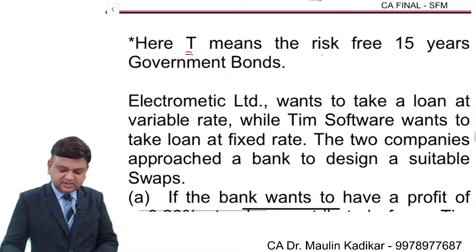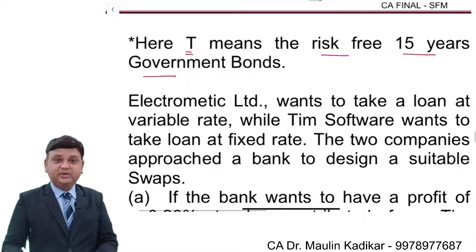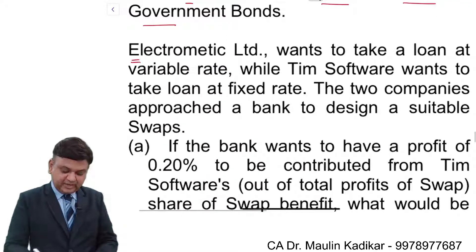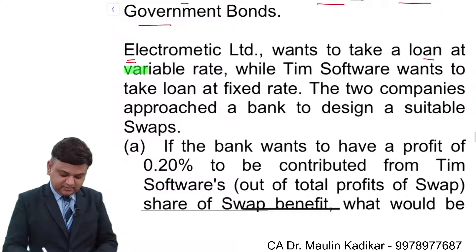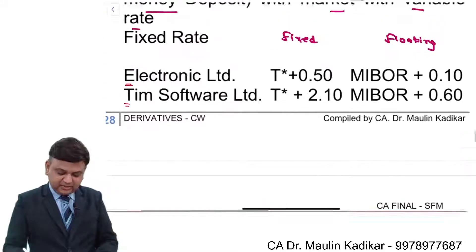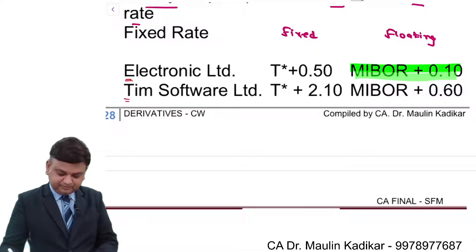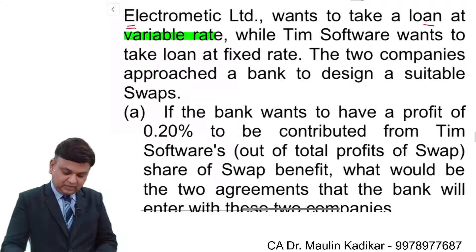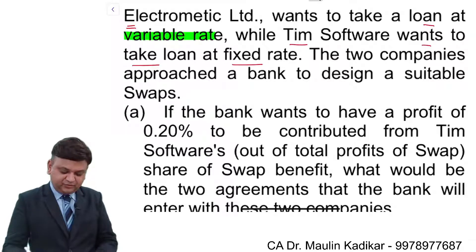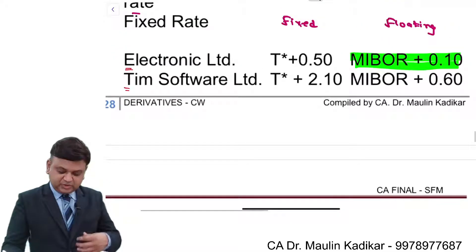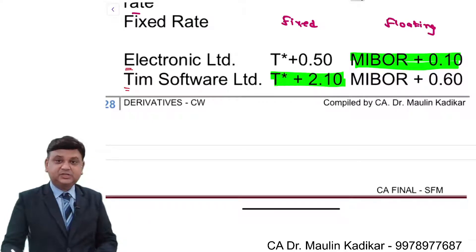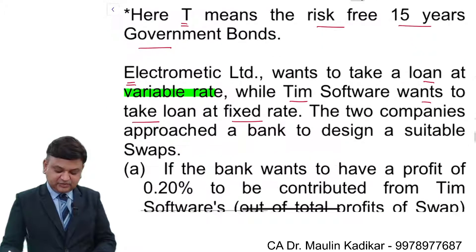Here, T means the risk-free 15-year Government of India Bonds. E Limited wants to take a loan at variable rate — that is MIBOR plus 0.1%. While Team Software wants to borrow at the fixed rate, which is Treasury Value plus 2.1%.